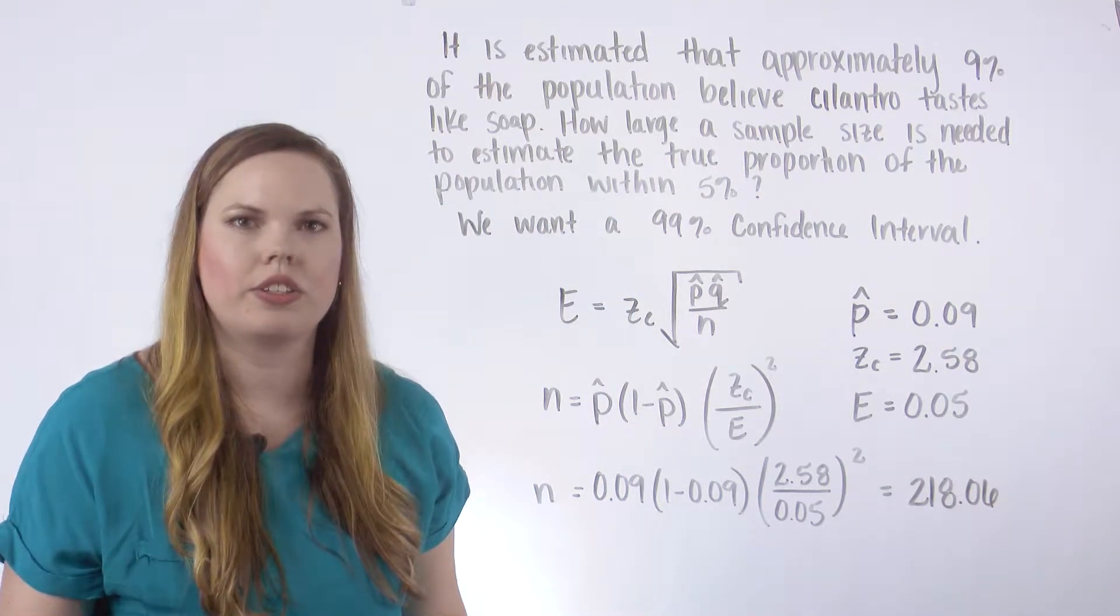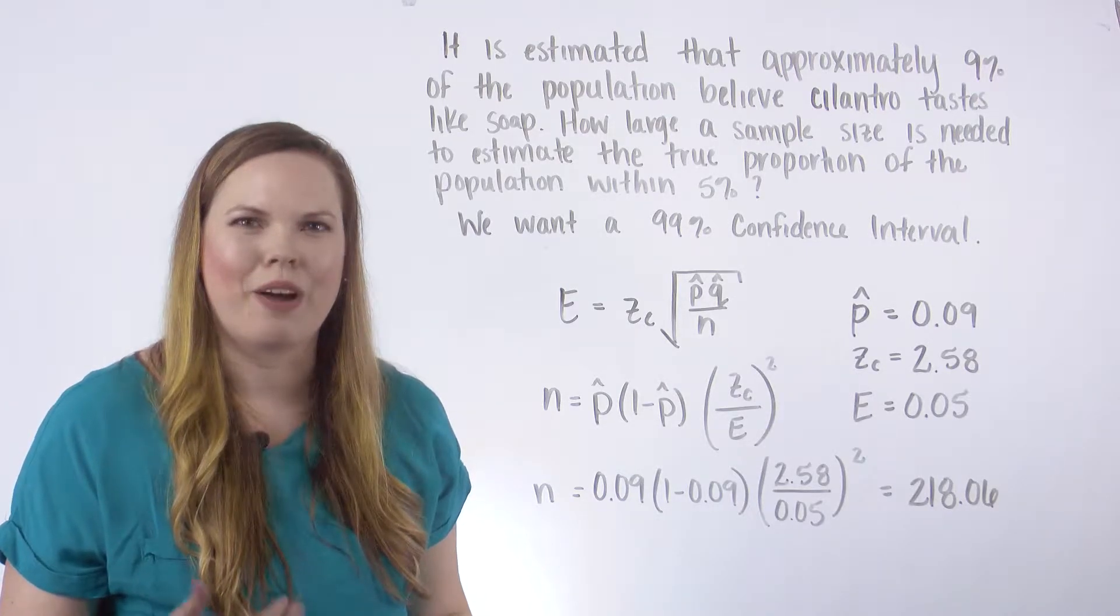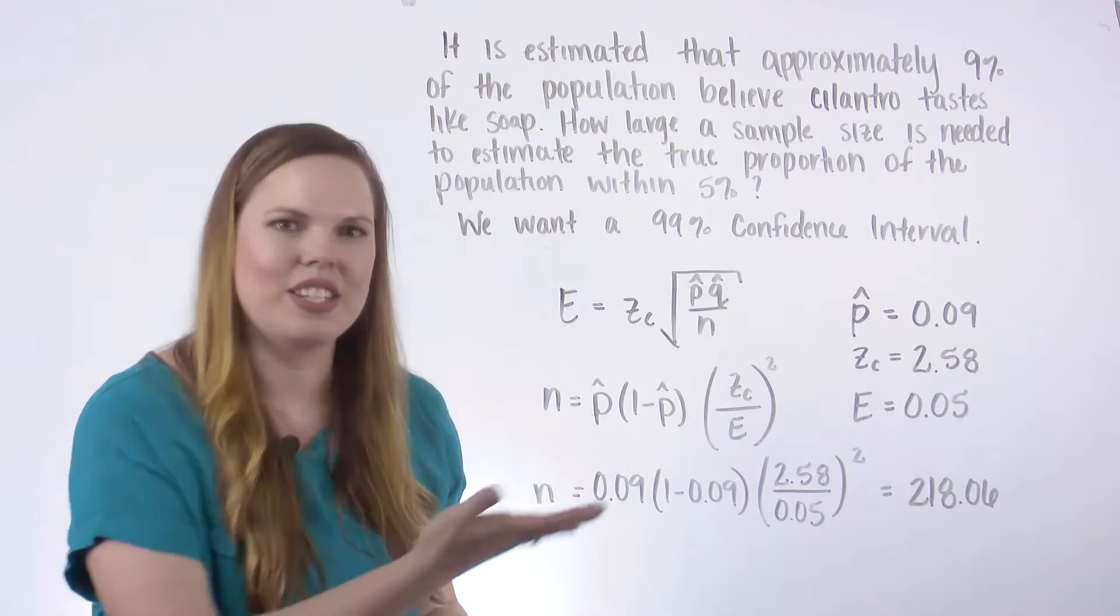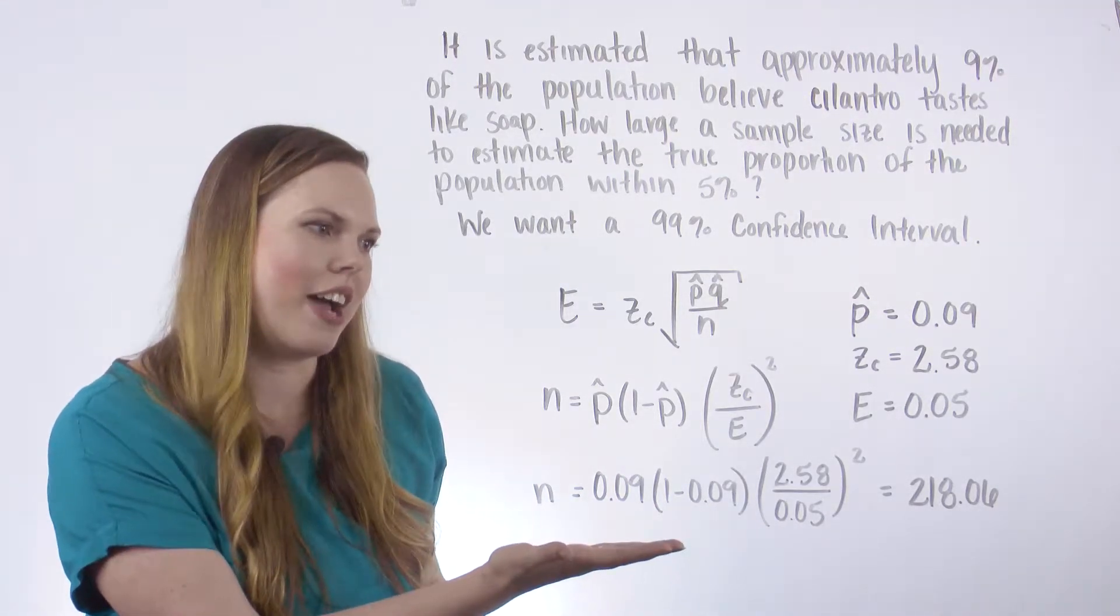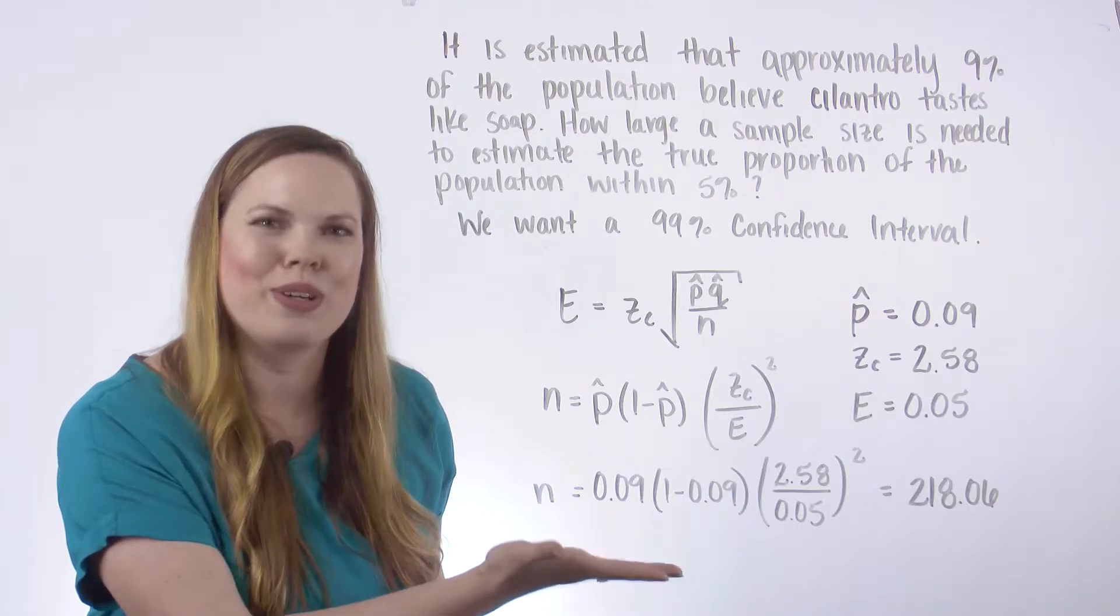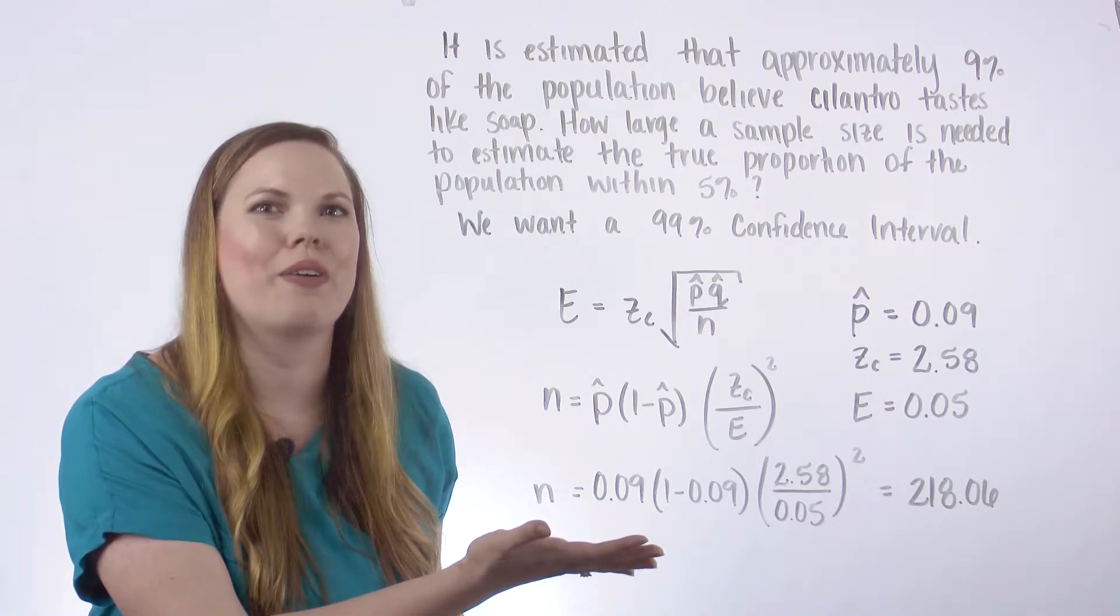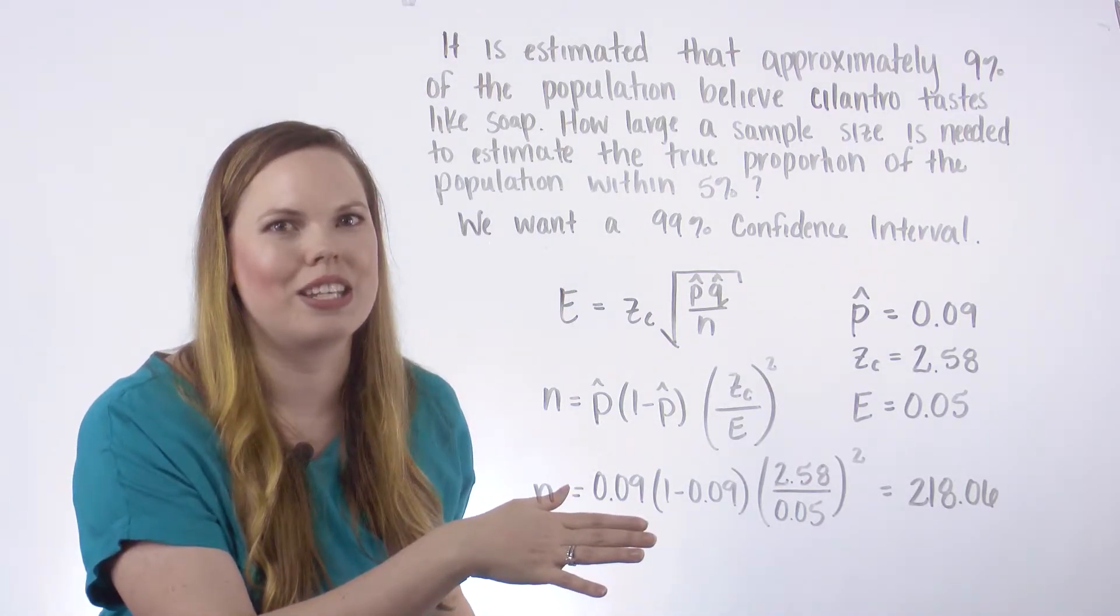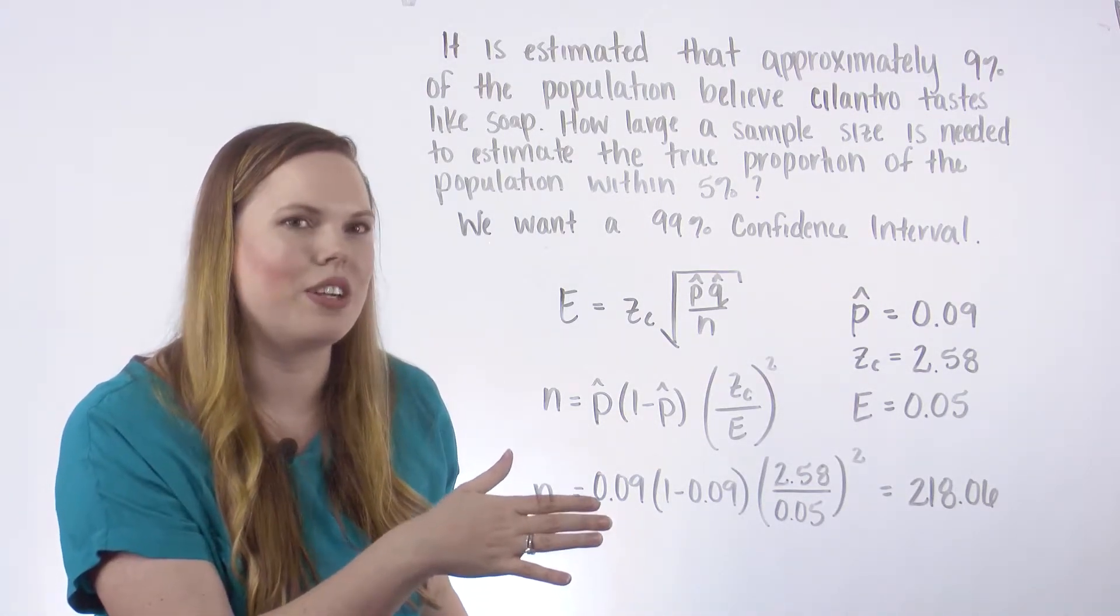Now much like if we wanted to do this with a confidence interval for a mean, we talked about the fact that this is a minimum, and so we can't find 0.06 of a person to survey. So how many do you really need? And it's so tempting to round this to 218. But if 218.06 is a minimum,